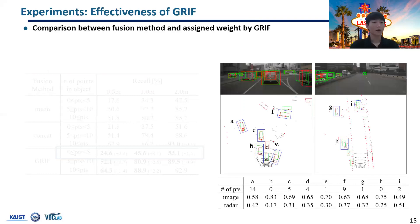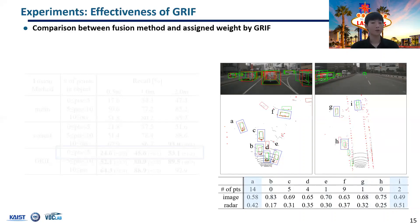In addition, we analyze the weights assigned to the image and radar features by the gated ROI fusion network. Interestingly, the gating network puts more weight on the image features when the object has no or only few radar points. On the other hand, if there are enough points on the object or the object is too small in the image, the gating network puts relatively more weight on the radar feature. This helps us understand the behavior of the network and makes the deep learning model interpretable.